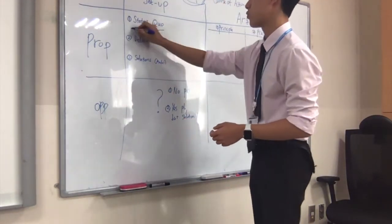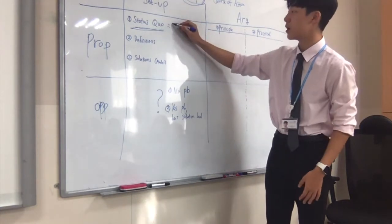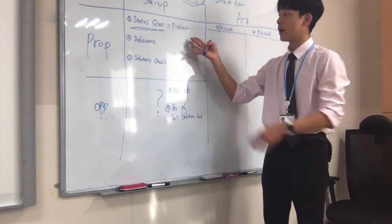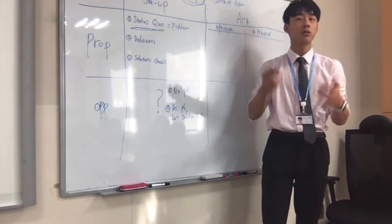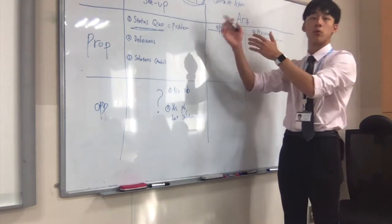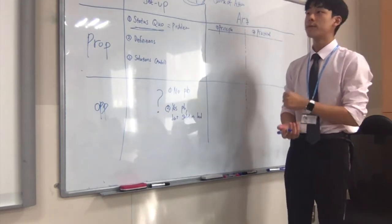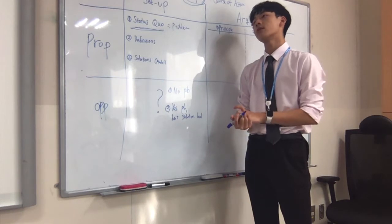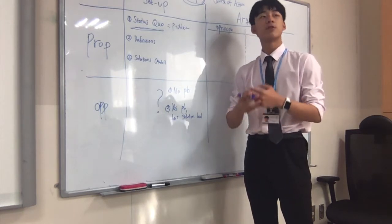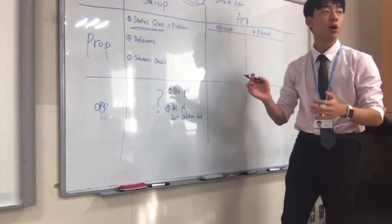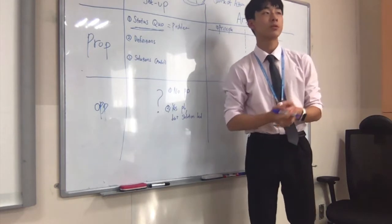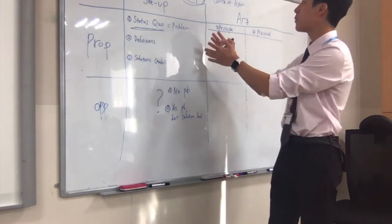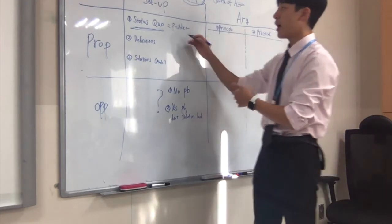We call that in fancy words the status quo, which is basically another word for the state of our society — the problem in our society. This is where you talk about what is so problematic and why this topic is so important, especially in the 21st century context. For example, you could relate the proposed topic with things going on in our world, like global warming or climate change. That's where you talk about the problem and why this topic is so significant to your side. This is the first part of the setup.